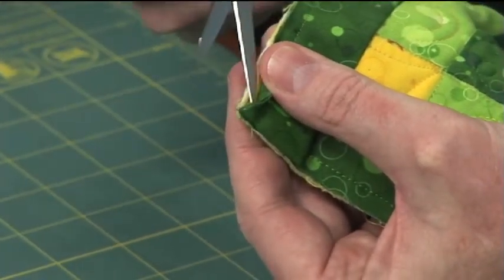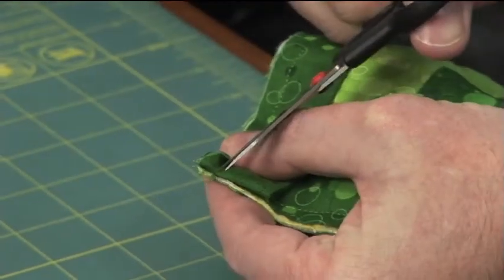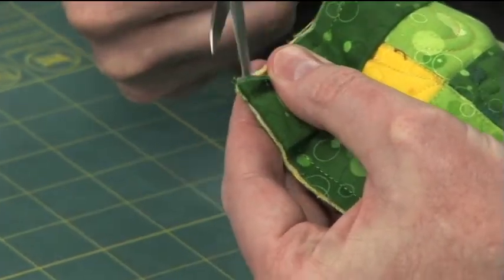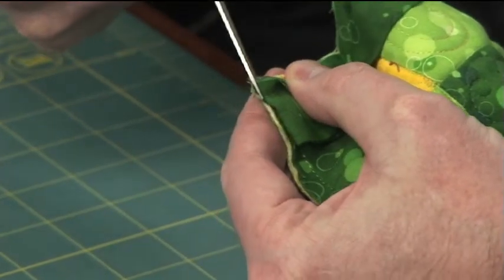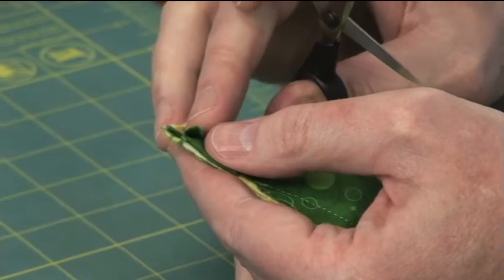Right up into the seam allowance, the stitching line. Put the point there and you're going to cut right on that fold. So we're just separating the seam allowance of the binding on the fold line.